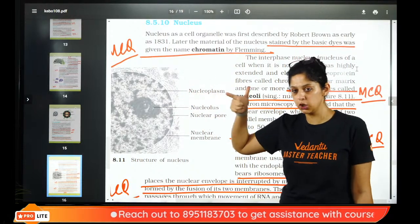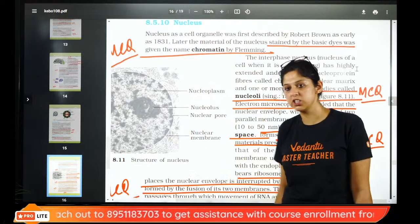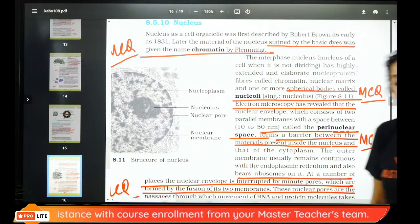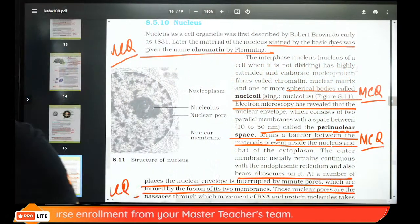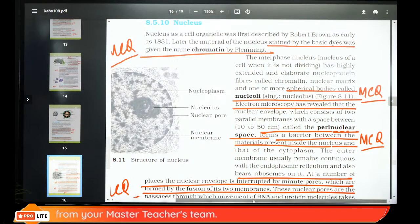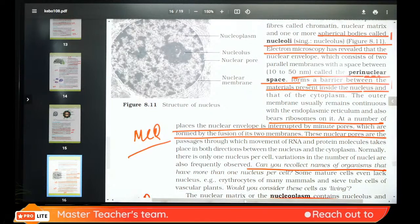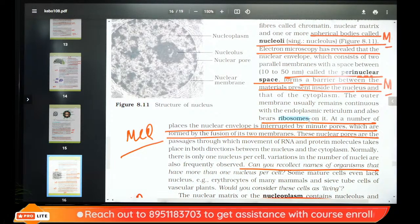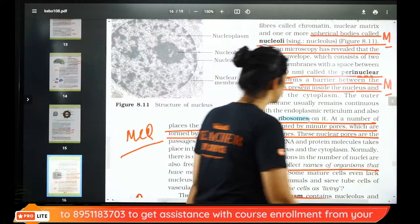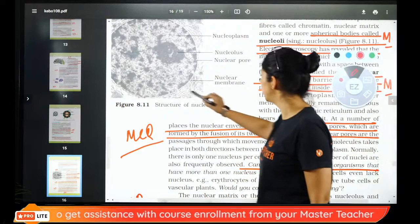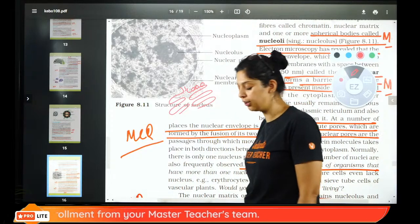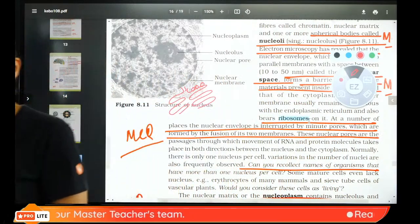The space between nucleus and cytoplasm is perinuclear space. Nucleus makes ribosomes — for ribosomes, rRNA is required, which the nucleolus makes. Endoplasmic reticulum originates from the nuclear membrane. Rough ER has ribosomes attached; smooth ER does not.